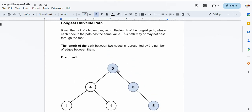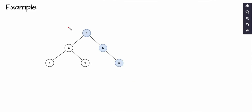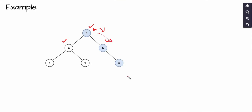Let's better understand the problem statement using an example. We have a binary tree with 6 nodes. Starting from the root, I check the left child and the right child. The left child has value 4 while the root has value 5, so they don't match. But the right child's value matches, so I move to the right child and keep moving as long as values match. The length of this univalue path is 2 because we have two edges along this path.